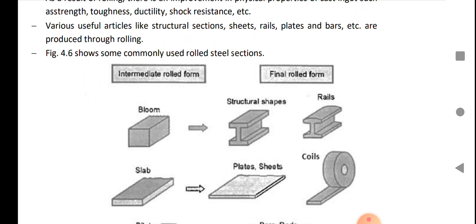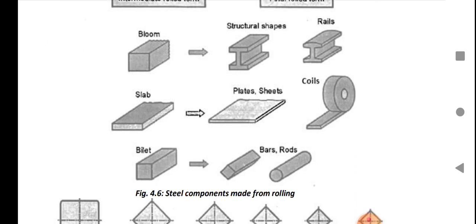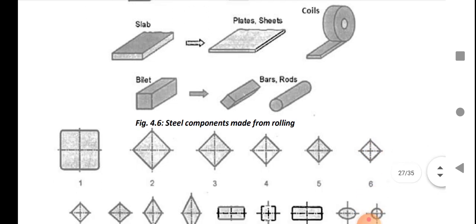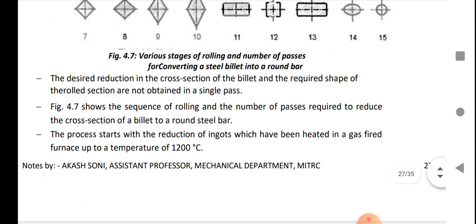Figure 4.6 shows some commonly used rolled steel sections. As you see in this figure, the bloom is converted into structural shapes or rails, slab converted into plate, sheet, or coils. This is converted into bar or rods. This is the cross section of different types of cross operation on the billet.